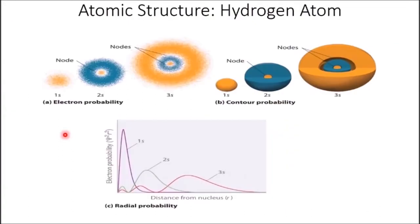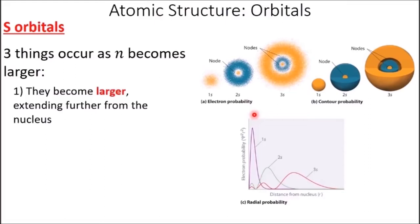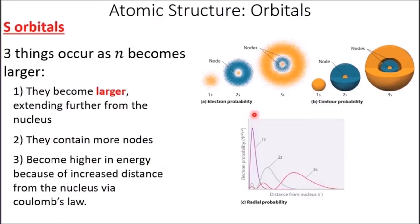Now let's talk about the different types of subshells: S, P, D, and F. For S orbitals, three things occur as n becomes larger: the orbitals become larger, extending further from the nucleus; they contain more nodes; and they become higher in energy because of increased distance from the nucleus via Coulomb's law. Coulomb's law: F electrostatic equals K times big Q times little q over r squared. For oppositely charged particles, if you increase distance you decrease force of attraction; if you decrease distance you increase force of attraction. That is the entire basis of this lecture.